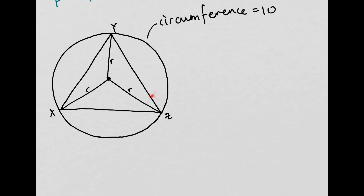We also know about all of these angles, because this is an equilateral triangle. So we know that this angle here is going to be π/3. And then this angle here is just going to be half that, so it's going to be π/6. So we have a length and an angle.